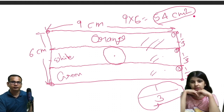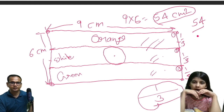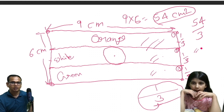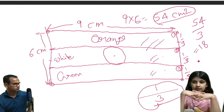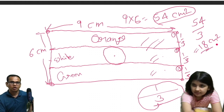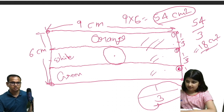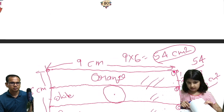You got it? Yes, I got it. 54 is the total area, then we divide by three. How much will we get? We will get 18, or 18 square centimeters for each color, each small rectangle. Understood? Understood. Good.